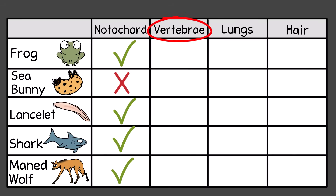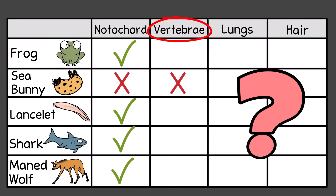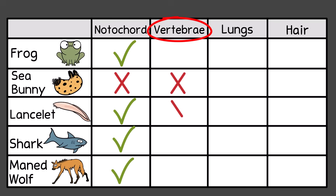Next, vertebrae — this is for the vertebrate animals. We know the sea bunny is a no. These remaining animals are in the phylum Chordata. Most chordates have vertebrae, but one of the chordates here does not and is technically an invertebrate chordate. Which one? The lancelet. X on that, but the remaining animals have a check.